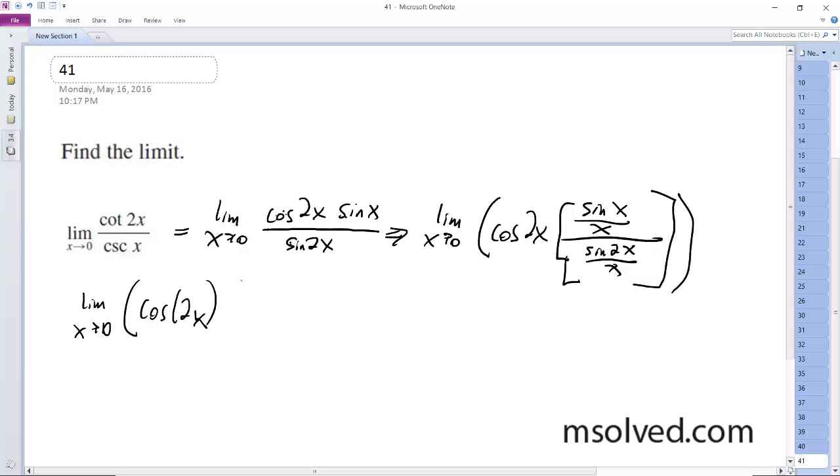actually to tell you the truth, I can just take it now. So, the cosine of 0 is just 1, doesn't matter if it's multiplied by 2,